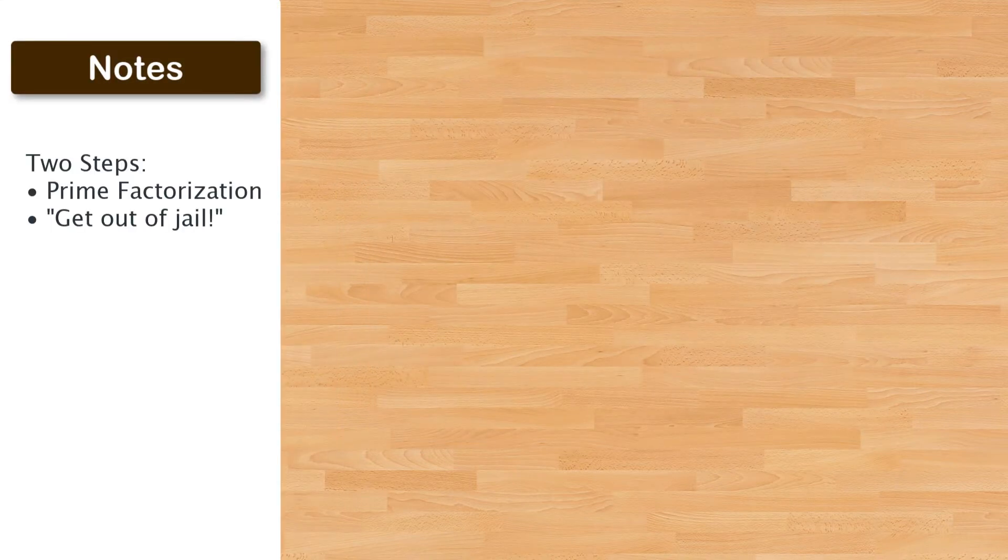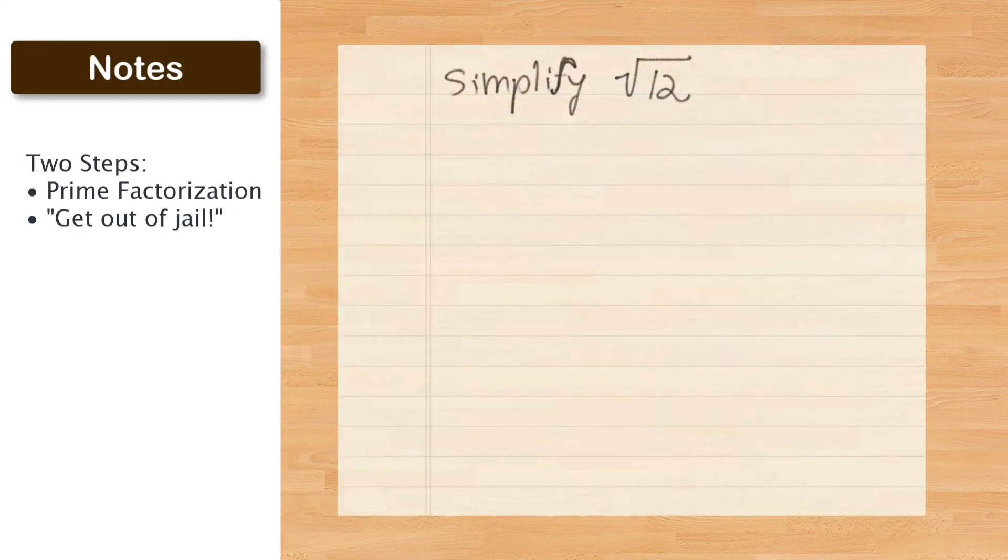Now, let's see how to do this manually. The way to do it is to break it down into two easy steps. Prime factorization. And what I like to call, get out of jail.